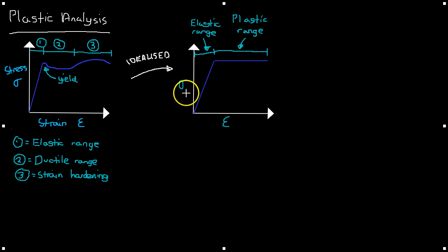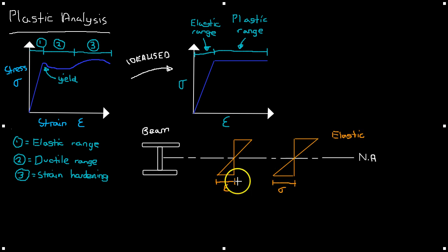If we look at this in a bit more detail and we look at, say, an I-section beam, and we look at the strain distribution diagram whilst it's in the elastic range, it will obviously be linear and it'll be these two triangle shapes on top of each other.